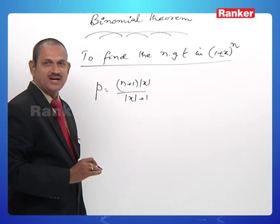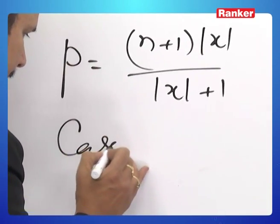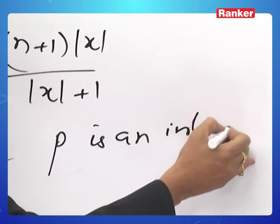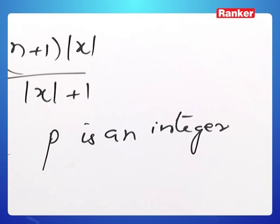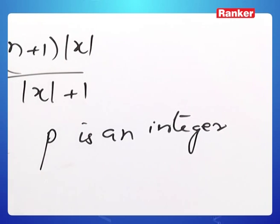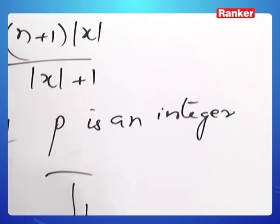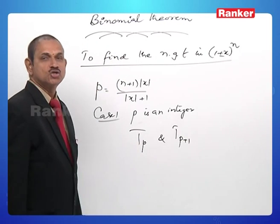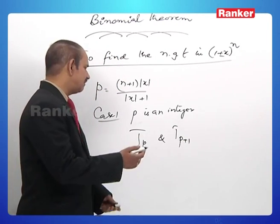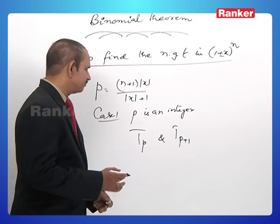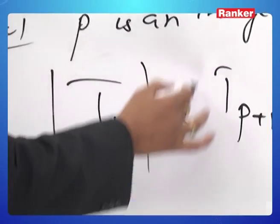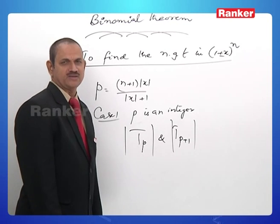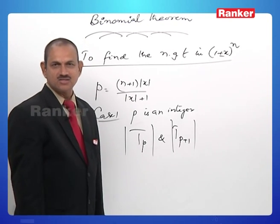Here two cases will arise. Case 1: p itself is an integer. In this case, there will be two numerically greatest terms, namely T_p and T_(p+1) are the two numerically greatest terms. As we are interested in numerical value only, we write |T_p| and |T_(p+1)| are the two numerically greatest terms.